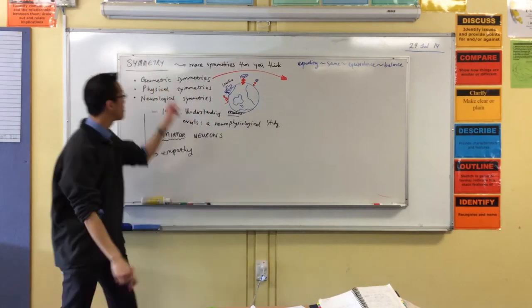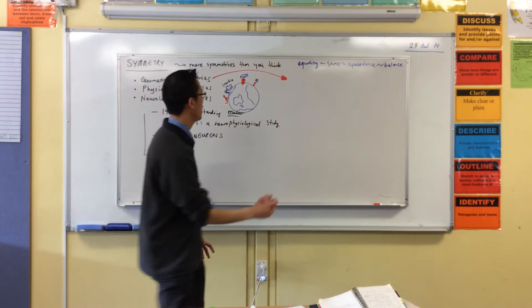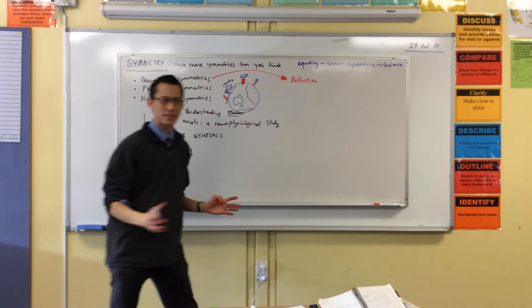We're going to dig a bit deeper into the geometric symmetries. Now, like you said, you already know some. You know about reflection. There's another name for reflective symmetry. Does anyone know what it is? It starts with an L.